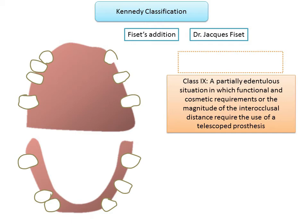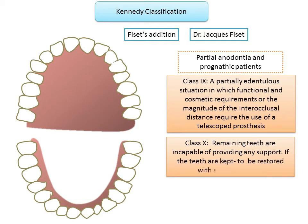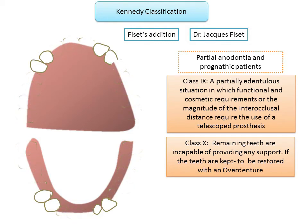In Class 9, the appliance needs to be telescoped because it is difficult to obtain an appliance with a single path of insertion. Its incidence is quite rare, usually seen in patients with partial anodontia and prognathic patients. Class 10 is a partially edentulous situation in which the remaining teeth are incapable of providing any support; if the teeth are retained to maintain alveolar integrity, the arch must be restored with an overdenture — a complete denture supported primarily by the denture foundation area.